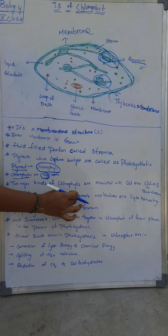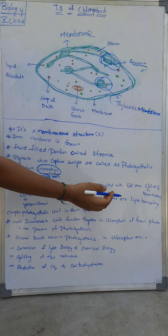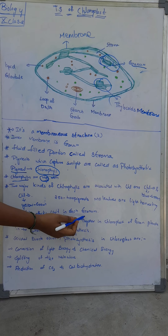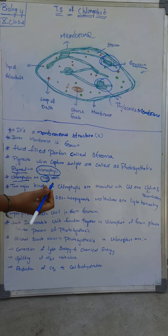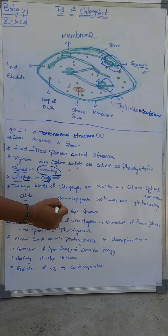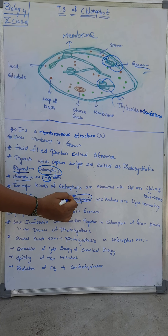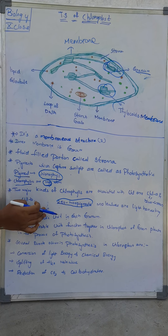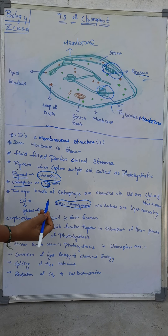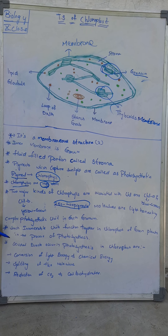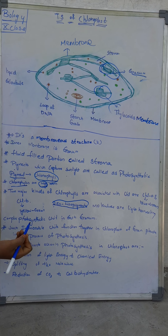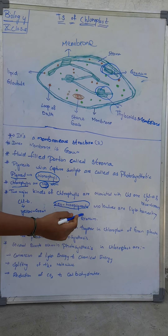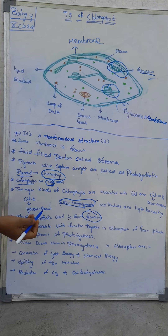There are 250 to 400 pigment molecules in each light harvesting complex, also called a photosynthetic unit, in each granule. These pigments are the light harvesting pigments — chlorophyll a and chlorophyll b.